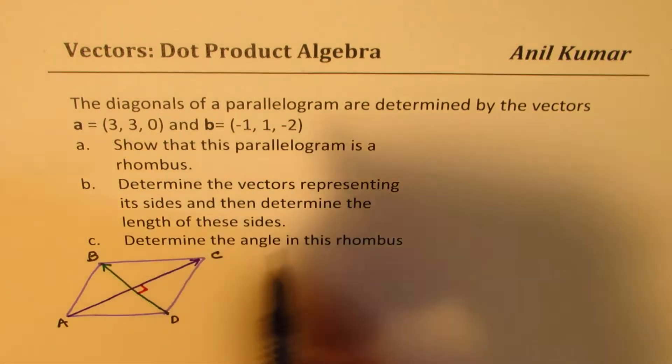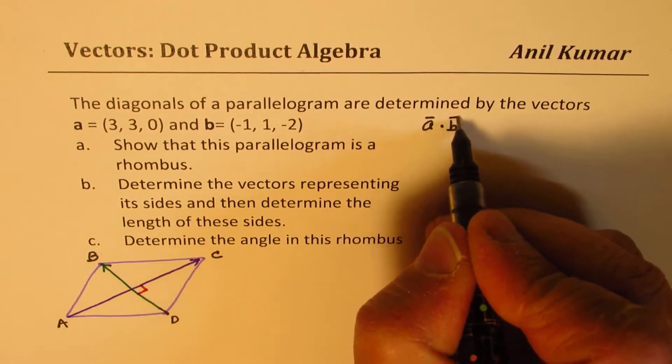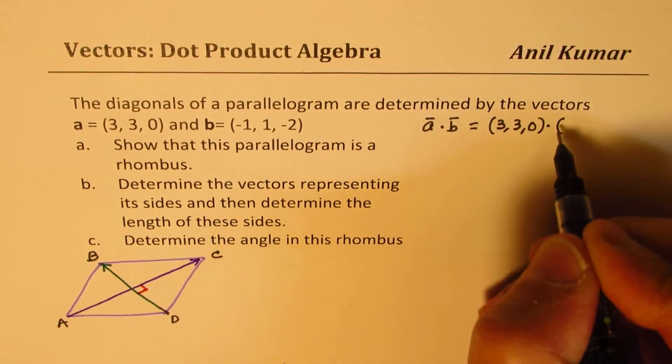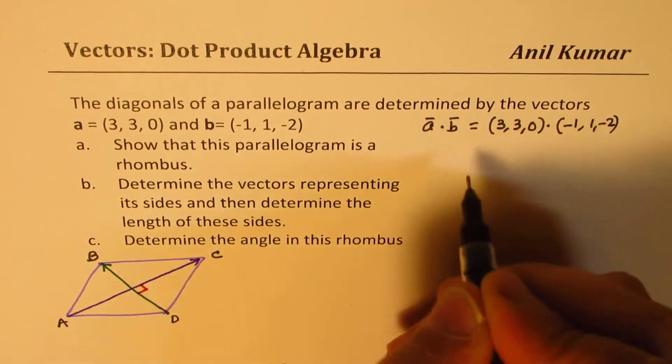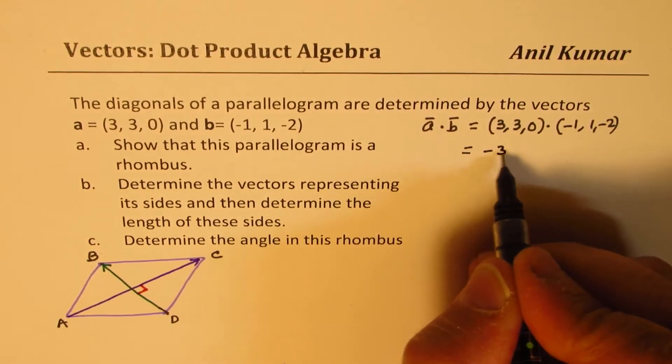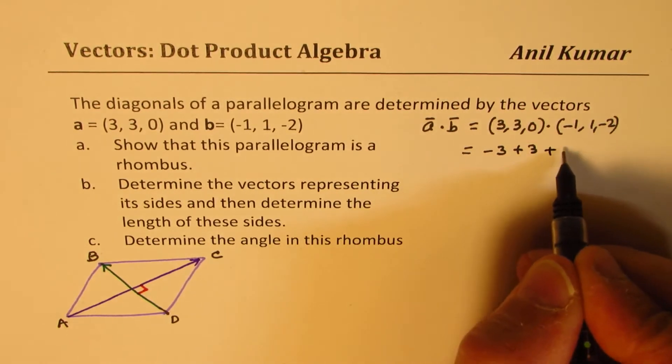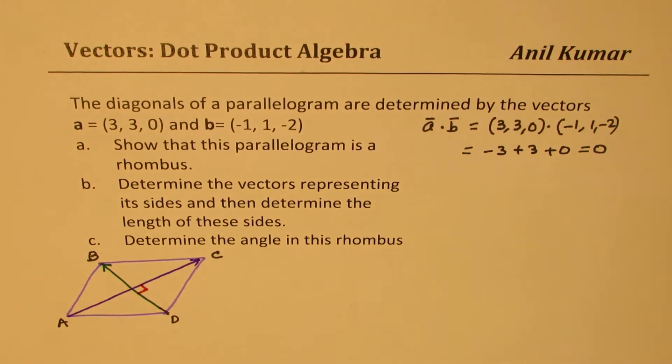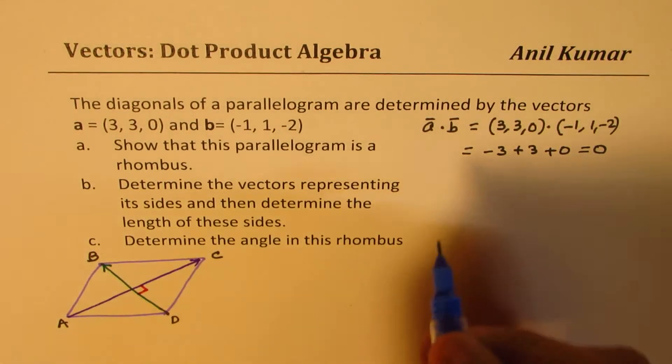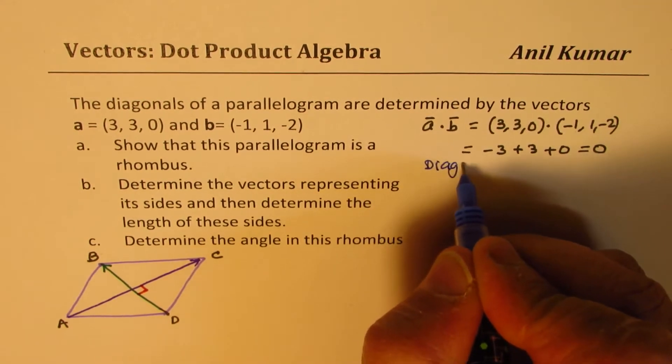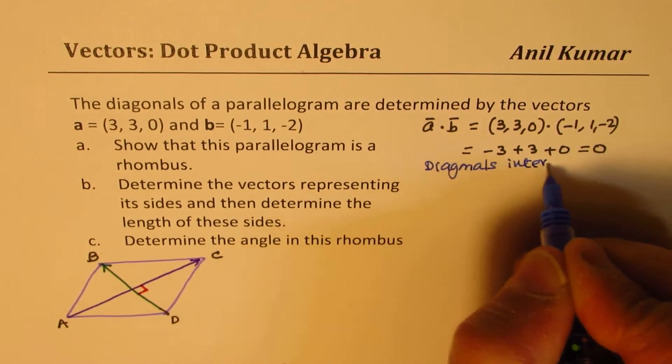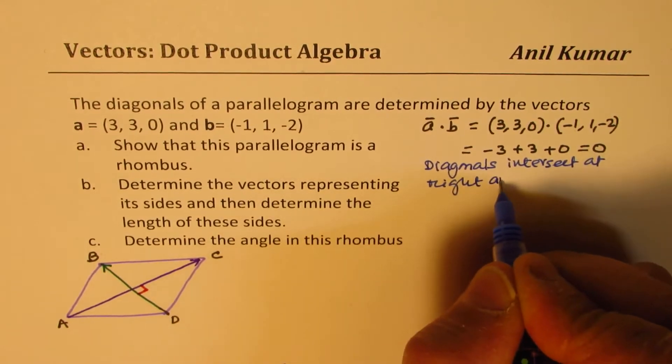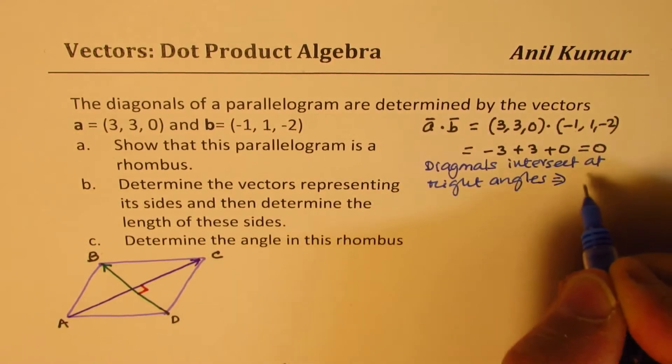Now what is the dot product of A and B? Let's figure this out first. So dot product is equal to 3, 3, 0 dot minus 1, 1, minus 2. That gives you minus 3 plus 3 and that is plus 0 and it is indeed 0. Since the dot product is 0, diagonals intersect at right angles. So that means it is a rhombus.